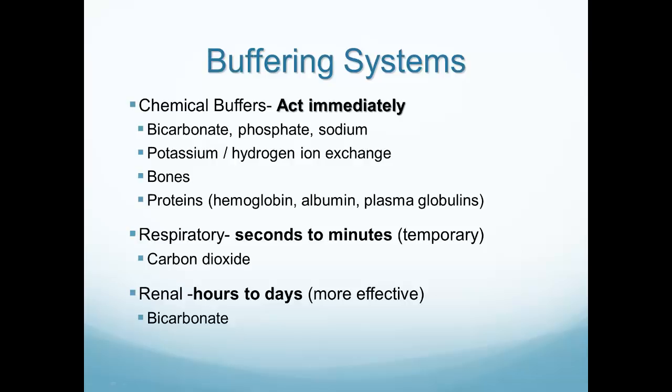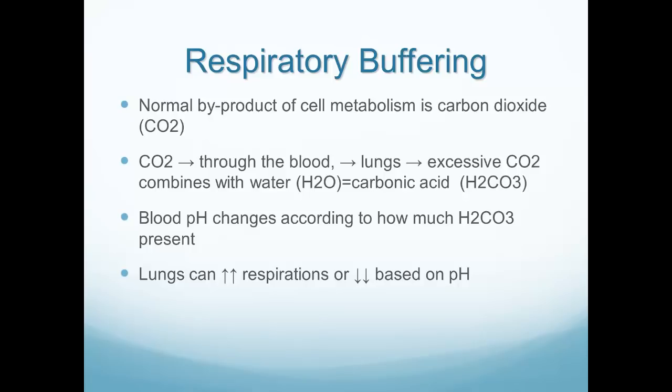Chemical buffers including bicarb, phosphate, sodium, and hemoglobin act immediately. Respiratory buffering through carbon dioxide is only a temporary measure — if we blow off too much CO2, the patient will have additional problems. The renal system takes hours to days but is more effective long-term, requiring bicarbonate. Compensation occurs when the system opposite to the problem kicks in to balance the pH — for example, if a patient has a metabolic problem and an acid-base abnormality, the metabolic system cannot fix it, so we rely on the respiratory system to compensate.